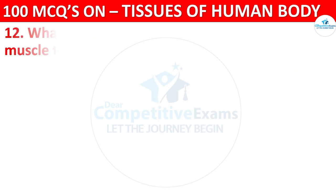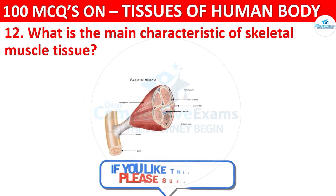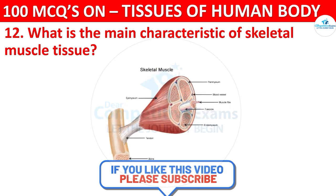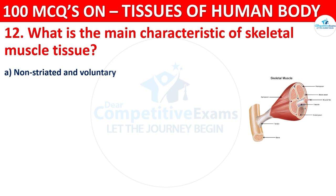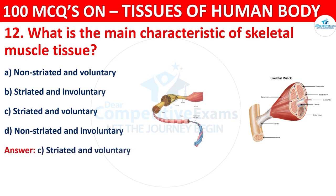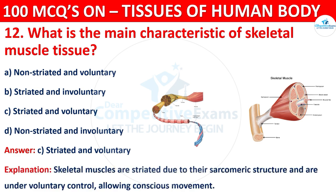Question number twelve: what is the main characteristic of skeletal muscle tissue? Options are non-striated and voluntary, striated and involuntary, or non-striated and involuntary. The correct answer is C, that is striated and voluntary. Skeletal muscles are striated due to their sarcomeric structure and are under voluntary control, allowing conscious movements.